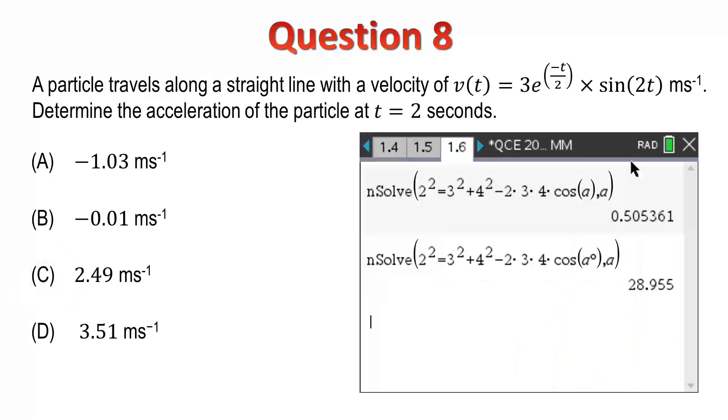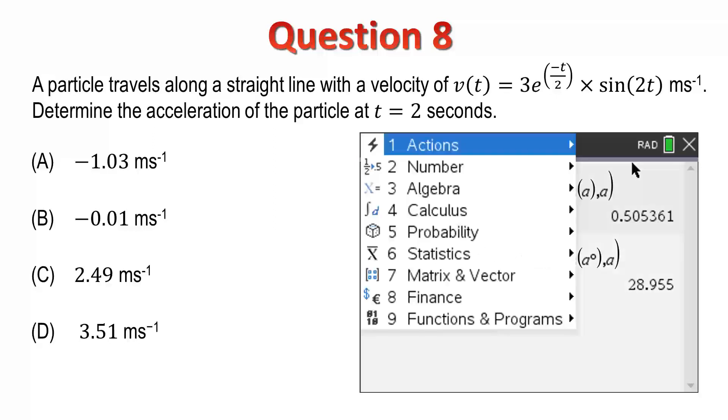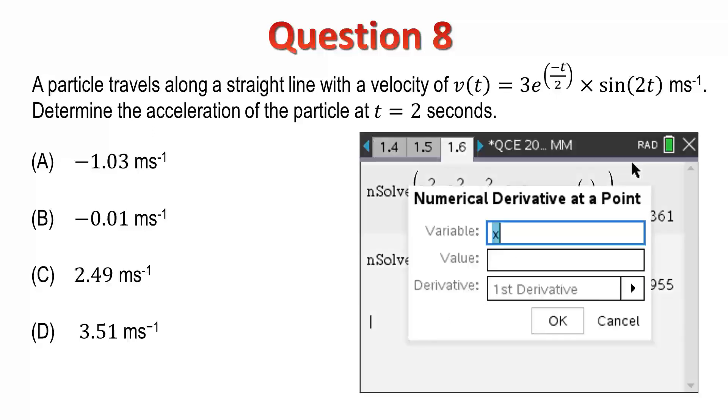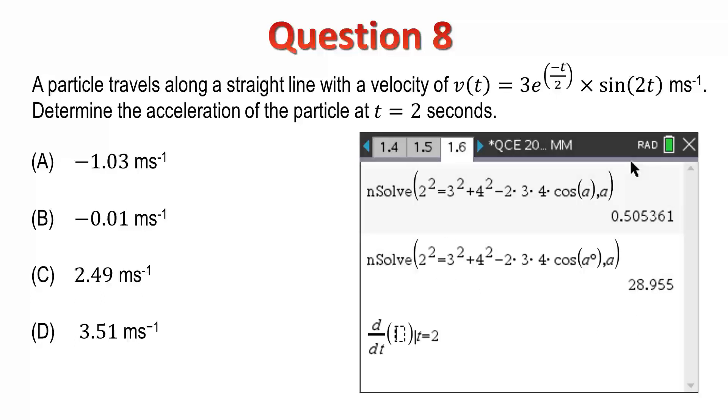Question 8. A particle travels along a straight line with velocity defined by v. Determine the acceleration of the particle at t equals 2 seconds. Once again, I'll use the calculus menu to find the derivative of a point. Because, we know that dv/dt will give us the acceleration. An important thing to note here is our velocity involves a trigonometric function. So, it's important to make sure that your calculator is set to radians.